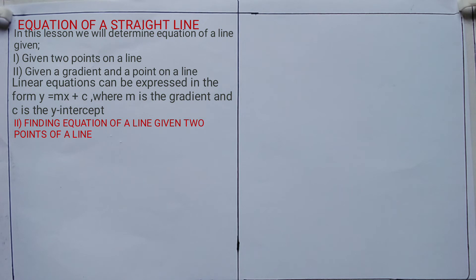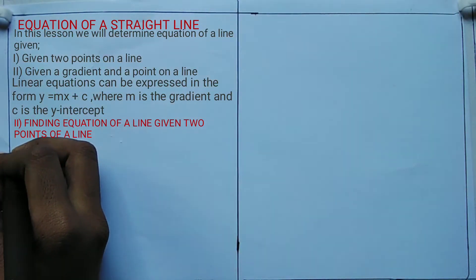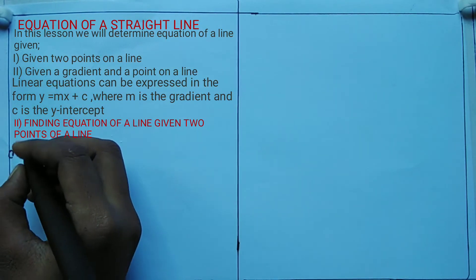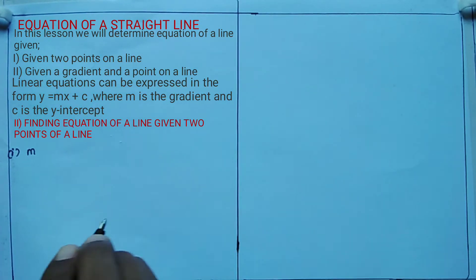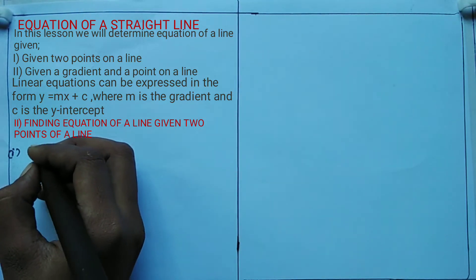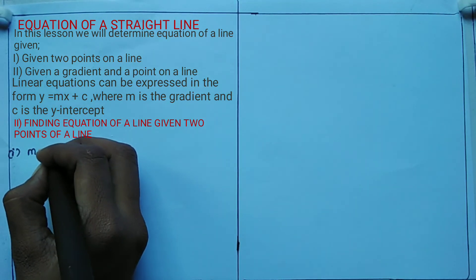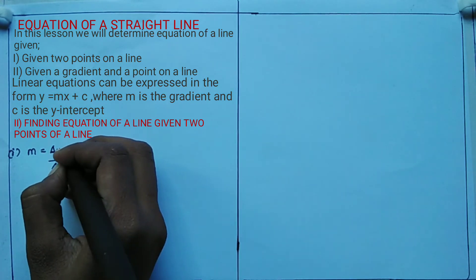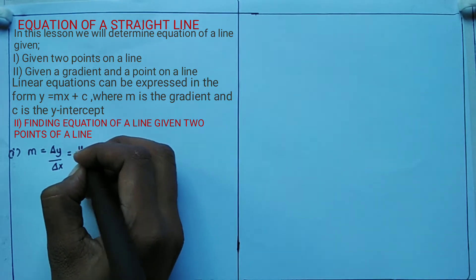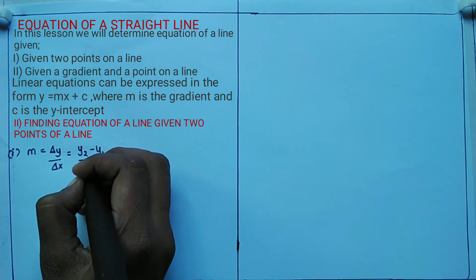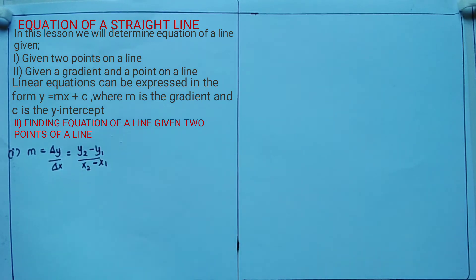The first scenario in which you can find the equation of a straight line is when you are given two points on a line. If you are given two points, the first step is to find the gradient. The gradient in mathematics is denoted by the letter m, which is calculated by change in y over change in x — also written as (y2 minus y1) all over (x2 minus x1).